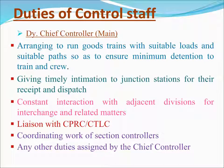The Deputy Controller (Main Line) is responsible for arranging to run goods trains with suitable loads and paths, ensuring minimum detentions to trains and crew, giving timely intimation to junction stations for receipt and dispatch, constant interaction with adjacent divisions for interchange and related matters, liaison with CPRC and CTLC, coordinating the work of section controllers, and any other duties assigned by the chief controller.